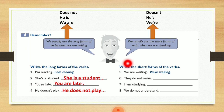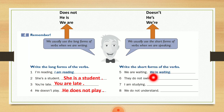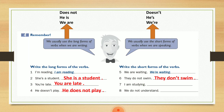نروح لجزء تاني من السؤال: Write the short forms of the verbs. Number five: We are waiting — صارت we're waiting، حدفنا الـ a وحطينا مكانها الـ apostrophe. Number six: they do not swim — بالـ short form رح تصير they don't swim. Number seven: I am studying — بالـ short form رح تصير I'm studying. And number eight: we do not understand — رح تصير we don't understand.